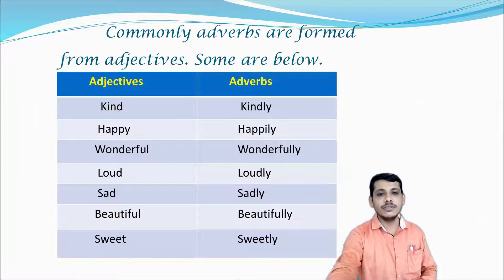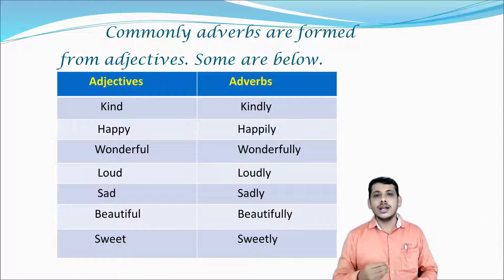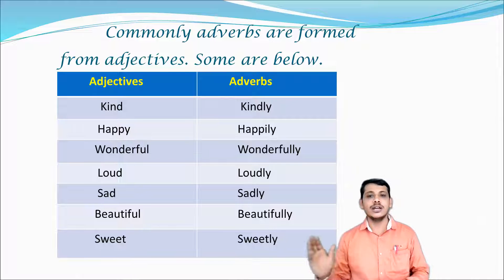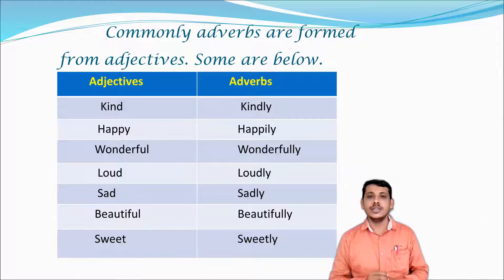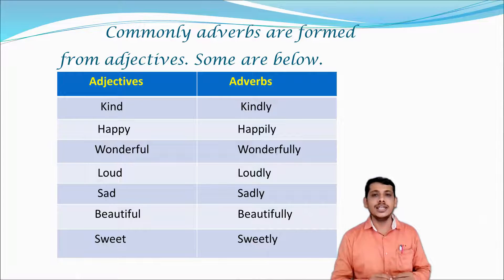Based on this, we have some kinds of adverbs. But before that, we'll see how adverbs are formed. Commonly, adverbs are formed using adjectives. For example, adjectives like kind, happy, wonderful, loud, sad, beautiful, and sweet — using these adjectives, I have formed adverbs like kindly, happily, wonderfully, lovely, sadly, beautifully, and sweetly.